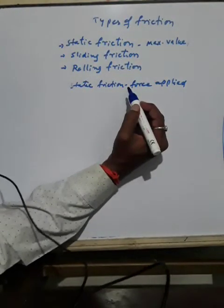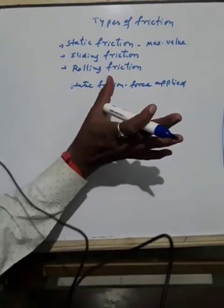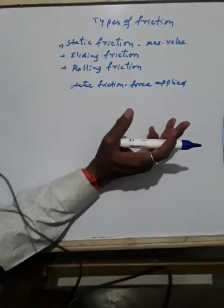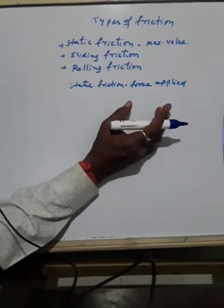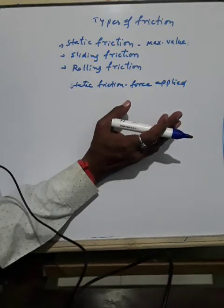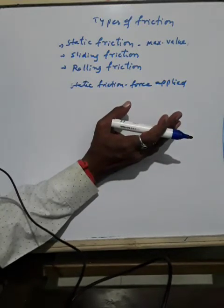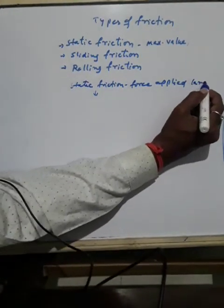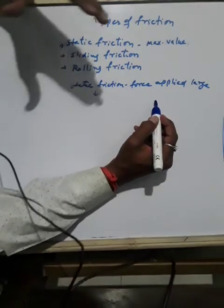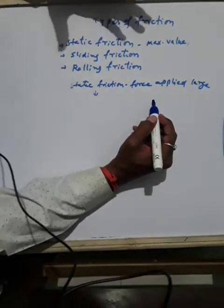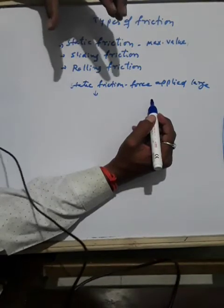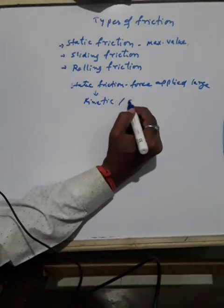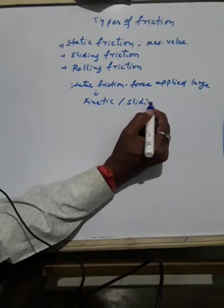When the applied force overcomes static friction, the object starts moving. At this point, static friction ceases and kinetic friction takes over. Once the force applied is larger than static friction, the object gets kinetic or sliding friction acting on it. Kinetic means movement — it starts motion. So kinetic friction is also called sliding friction.